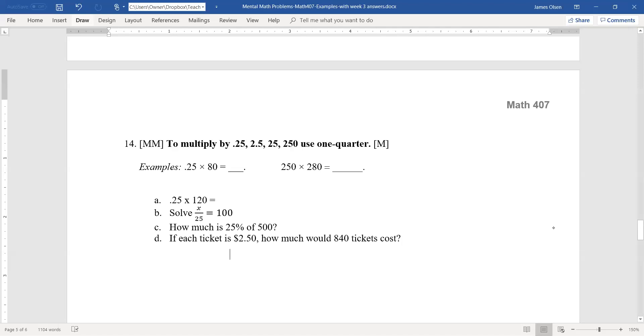So .25 times 80, and I'm thinking here one-fourth, which means to divide by four. So .25 times 80 is 80 divided by 4, which is 20. That's very straightforward.